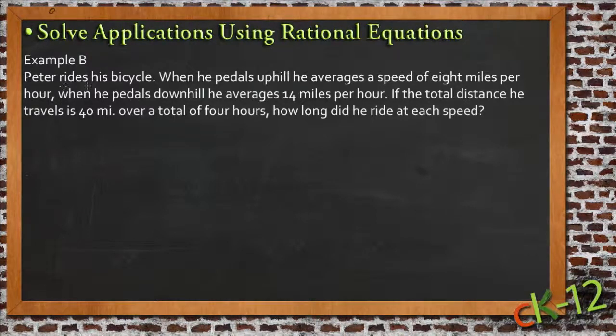Peter rides a bicycle. When he pedals uphill he averages 8 miles per hour. When he pedals downhill he averages 14 miles per hour. If the total distance he travels is 40 miles over a total of 4 hours, how long did he ride at each speed?